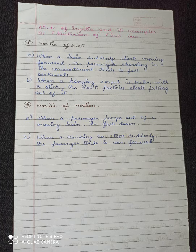Now, moving to examples related to inertia of motion. When a passenger jumps out of a moving train, he falls down. When the train is moving, the passenger's body is also in the state of motion. So when the passenger jumps suddenly and comes to rest on the ground, the body's forward motion causes them to fall down.